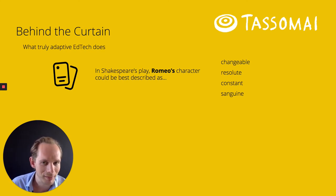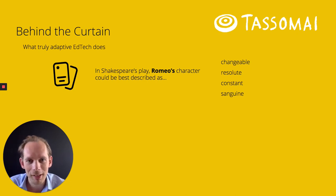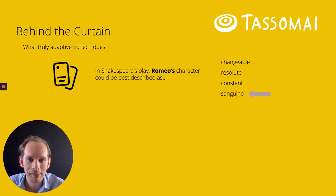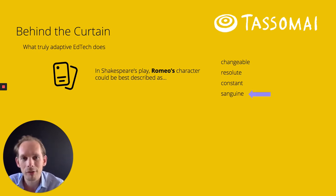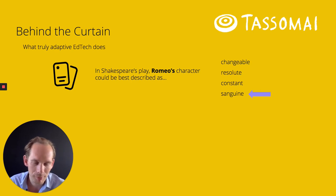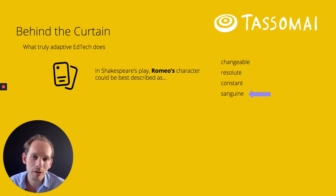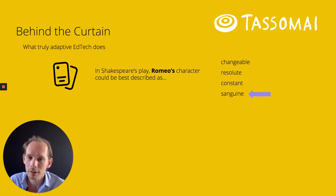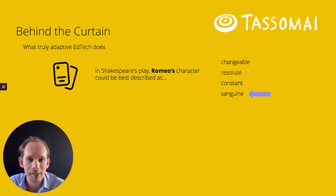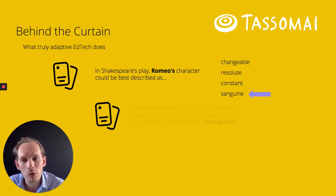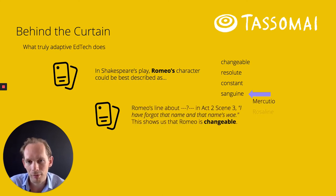Let's say we don't know the answer, guess 'sanguine', and it gives the correction: not sanguine — actually Romeo is changeable. Where's the therapy beyond that correction? Well, you'll see that question again. But next time you do the quiz on characterisation in Romeo and Juliet, it will also bring up a connected question — one that tells you the answer to the previous question.